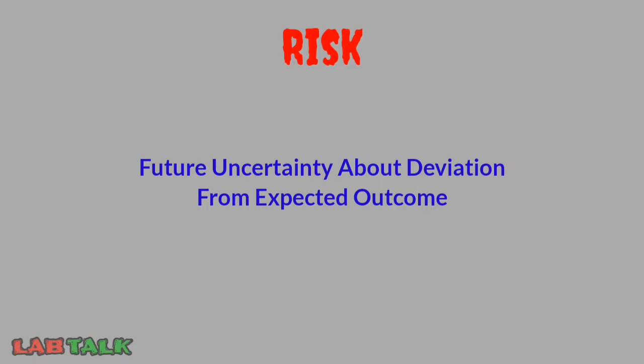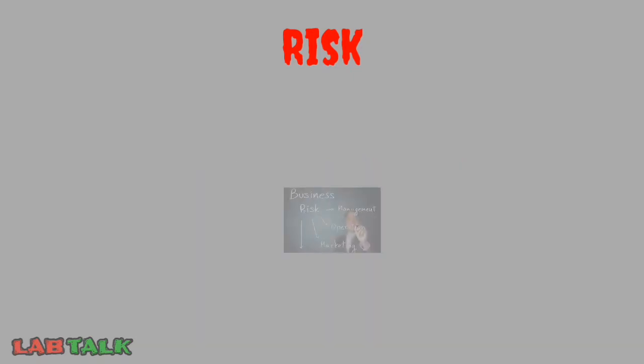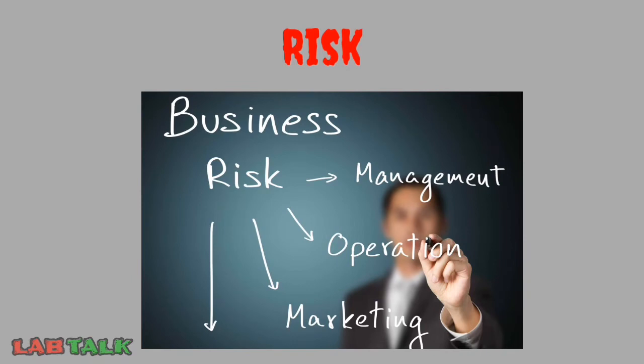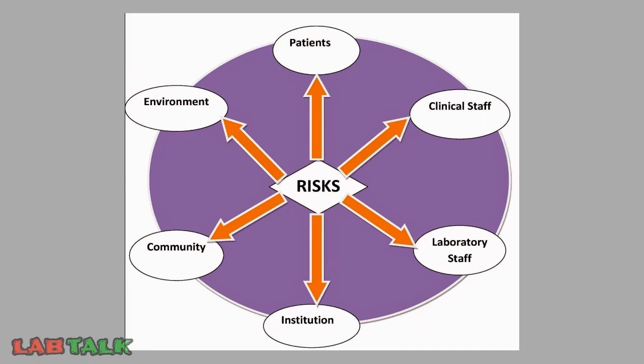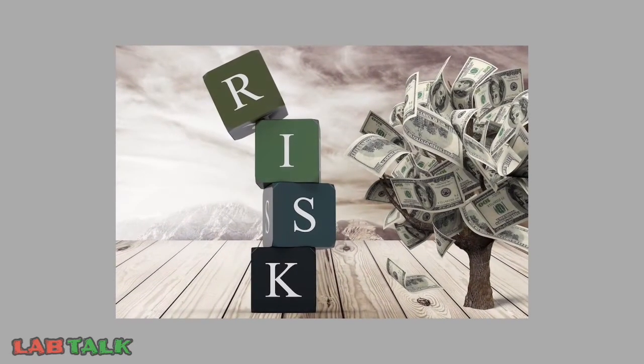There are different types of risk: risk to businesses, risk to insurance, default risk, and risk to people's health, wealth, and environment. If we consider risk in a medical laboratory, there are always chances of something bad happening. This risk can impact the patient, clinical staff, laboratory staff, the institution or organization itself, the community, and the environment. Risk in a medical laboratory can happen and impact at all levels and all areas of activity.